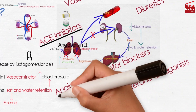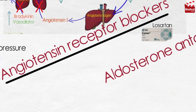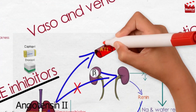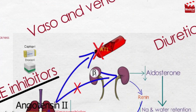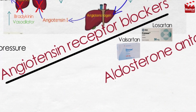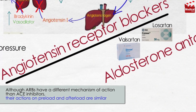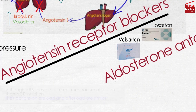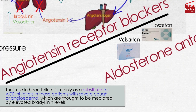The second group is angiotensin receptor blockers, such as losartan and valsartan. They are competitive antagonists of the angiotensin-2 type 1 receptor, so they block angiotensin-2 action and do not affect bradykinin levels. Their use in heart failure is mainly as a substitute for ACE inhibitors in patients with severe cough or angioedema, which are thought to be mediated by elevated bradykinin levels.